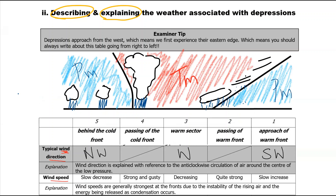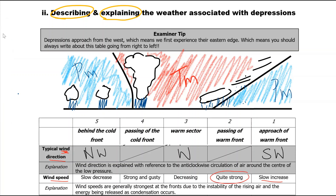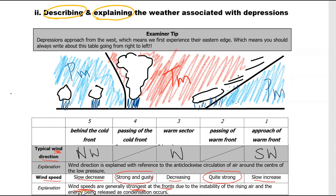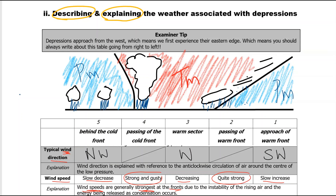For wind speeds: you get a slow increase approaching the warm front, then stronger winds at the front, decreasing slightly in the warm sector, then strong and gusty at the cold front, followed by a slow decrease behind it. The reason is that wind speeds are generally strongest at the fronts because that's where condensation is occurring and energy is being released — and that energy release is what drives the strongest winds.